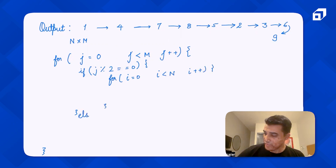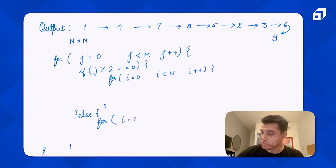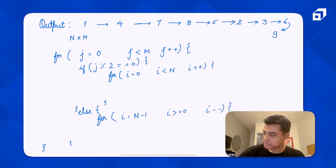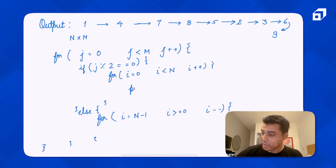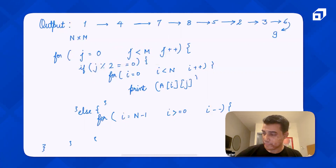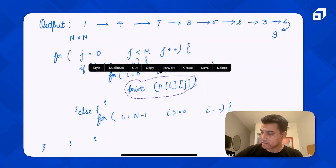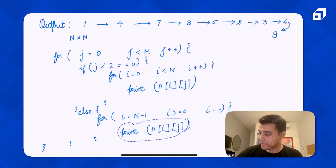If the column value is odd, then we traverse in the opposite manner, starting from n-1 and going all the way up to 0. Inside both branches we write the same print statement: print element a[i][j].